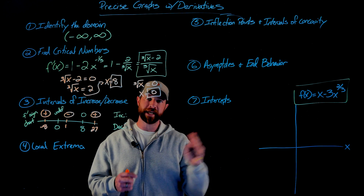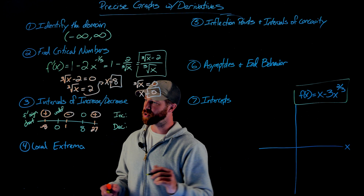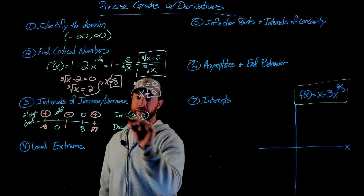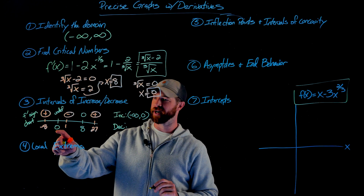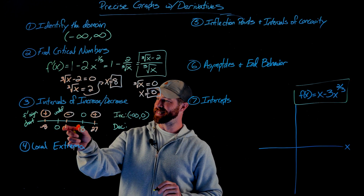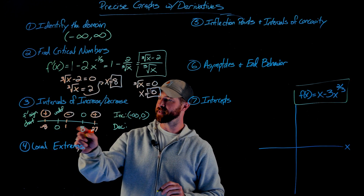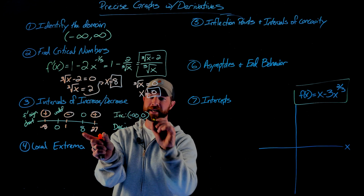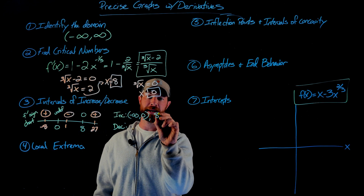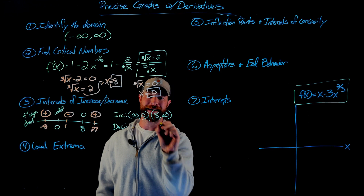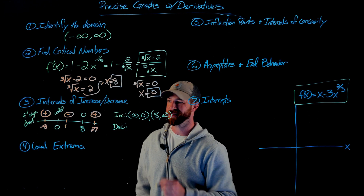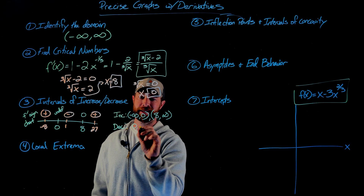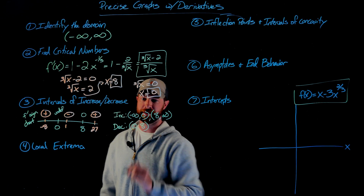So f(x) is increasing from negative infinity up to zero. At zero, the first derivative is undefined. It's decreasing between zero and eight, zero at eight, and then increasing from eight to infinity.